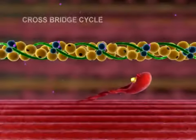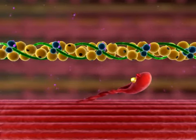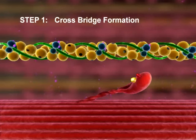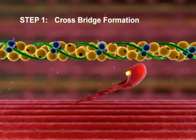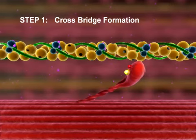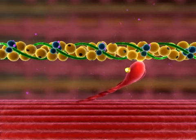A crossbridge cycle may be divided into four steps. Step 1: Crossbridge Formation. The activated myosin head binds to actin, forming a crossbridge. Inorganic phosphate is released, and the bond between myosin and actin becomes stronger.